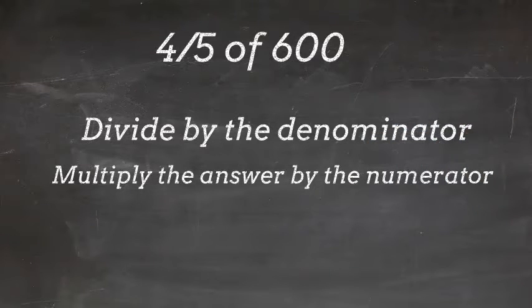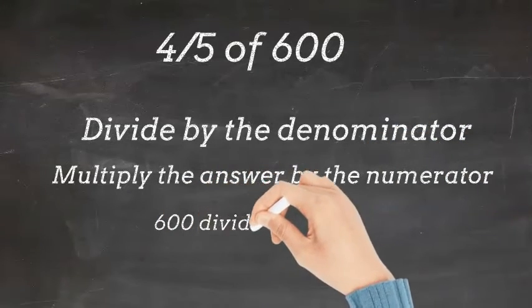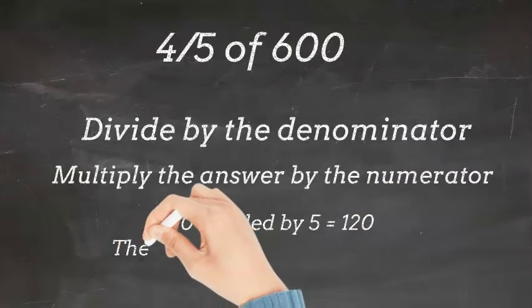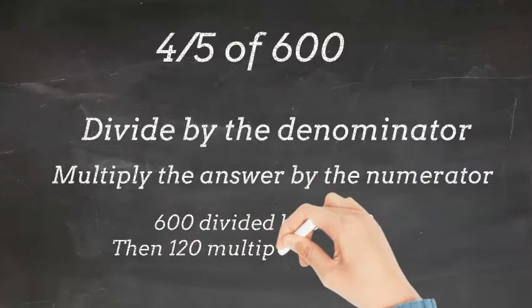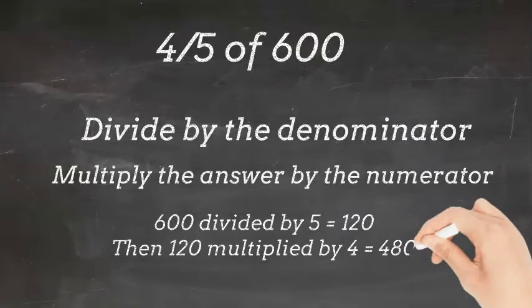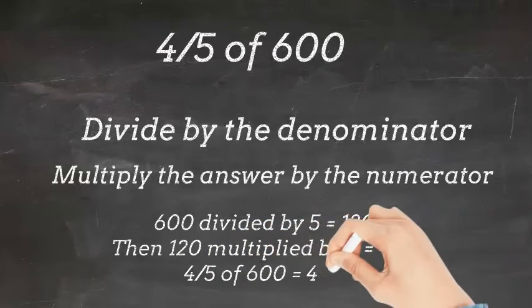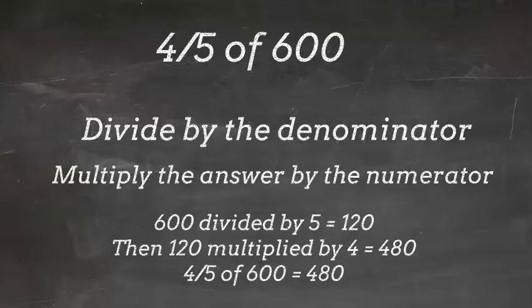So it's going to be 600 divided by 5, which equals 120. Then we do 120 multiplied by 4, which equals 480. So 4 fifths of 600 equals 480.